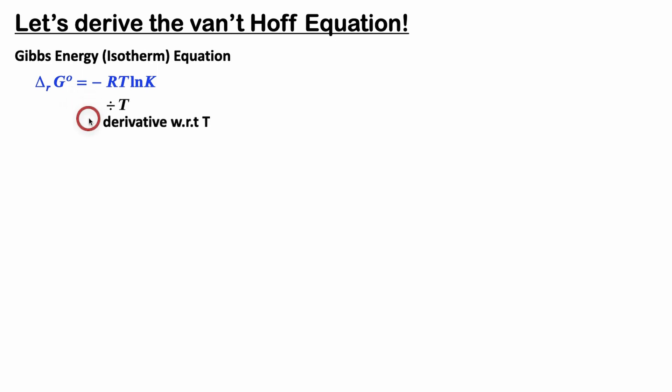From here we're going to divide both sides by T and take the derivative with respect to T to give us this right here. And then with a little minor rearrangement we'll just take this fraction, put it in the numerator, yank out the negative and R out of the derivative right here, and this gives us this equation.